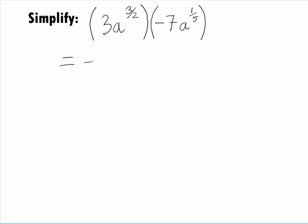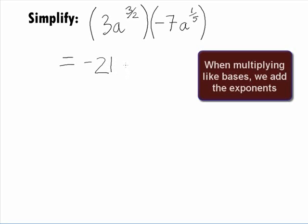When we multiply the 3 times the negative 7, we get negative 21. And a reminder that when we multiply like bases, we add our exponents.